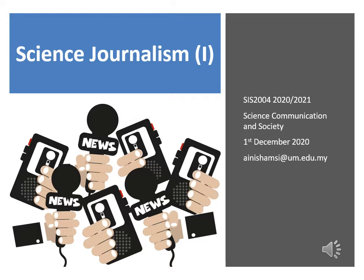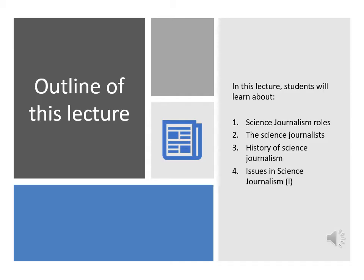So this is part one. Next week we're also going to discuss about science journalism. Let's begin. This is the outline of today's lecture. We're going to look at what are the roles of science journalism, prior to that what is science journalism, and then we're going to look at who are these science journalists and also a bit of the history of science journalism. And finally, in this topic, we're going to look at the issues in science journalism.